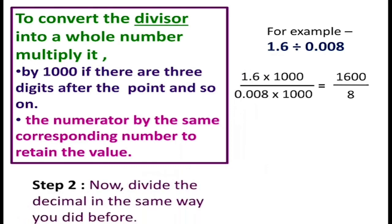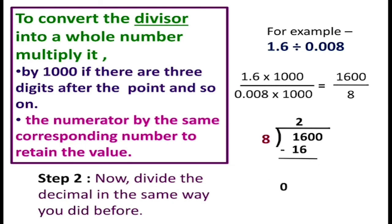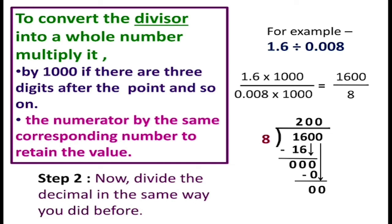Now divide 1600 by 8. 8 times 2 is 16, so write 2 in the quotient and 16 here. Subtract 16 from 16 to get 0. Bring the 0 down. 8 times 0 is 0, write 0 in the quotient. Subtract 0 from 0 to get 0. Bring the next 0 down and repeat: 0 in the quotient, subtract 0 from 0 to get 0. So the quotient is 200. Thank you.